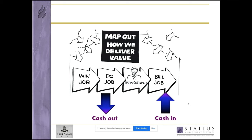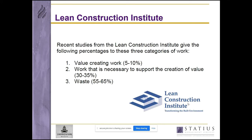At this point there are some figures from the Lean Construction Institute which might be enlightening. They've categorised construction work into three components: value-creating work, which they claim is only 5 to 10% of all work undertaken; work that's necessary to support the creation of value, estimated to be 30 to 35%; and waste — a massive 55 to 65% of the work undertaken. In order to improve the cash-to-cash cycle, we need to be more effective, more efficient and better organised.